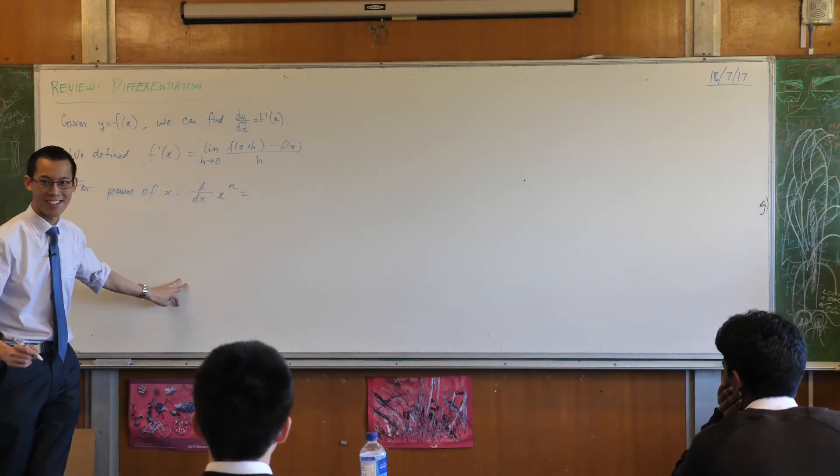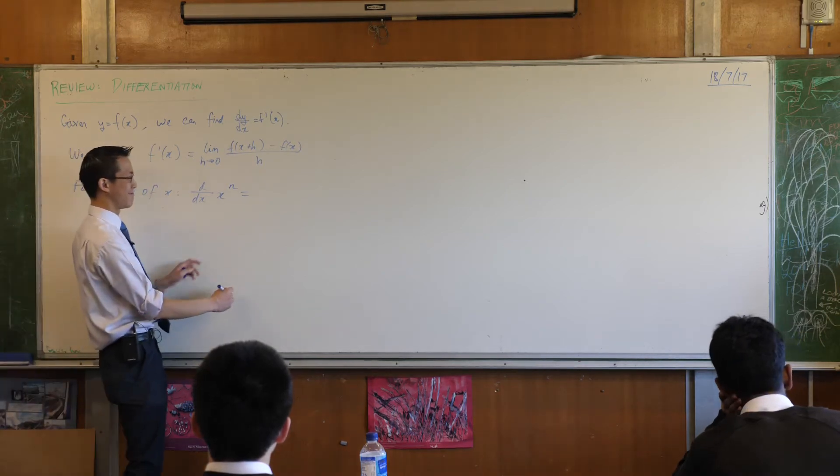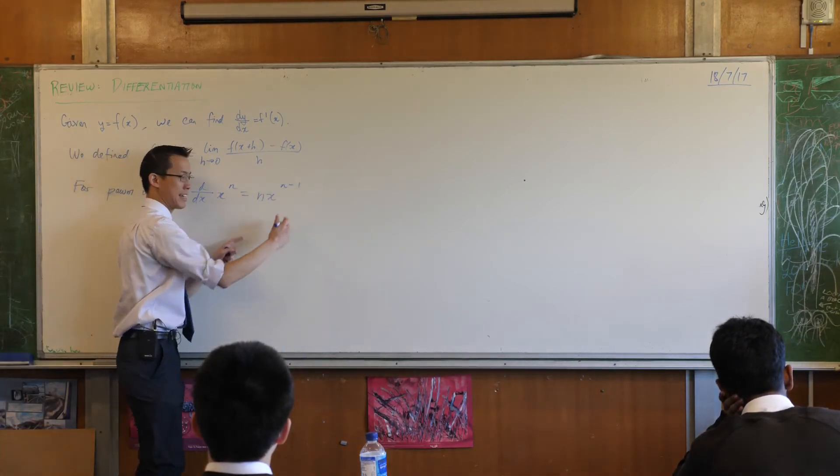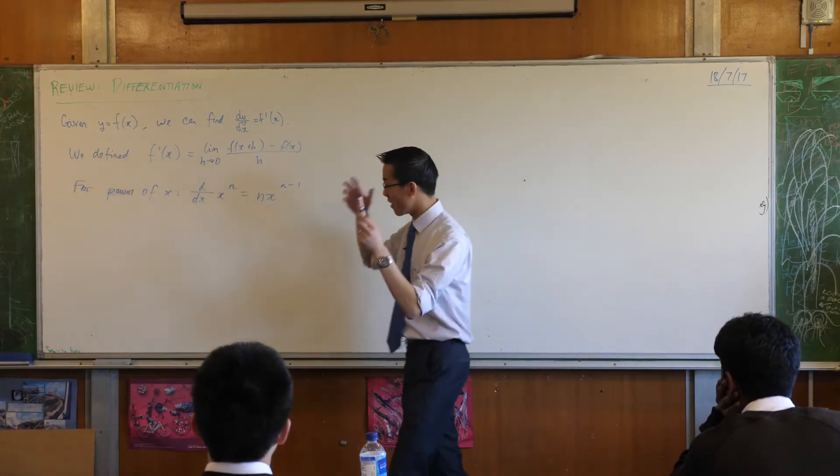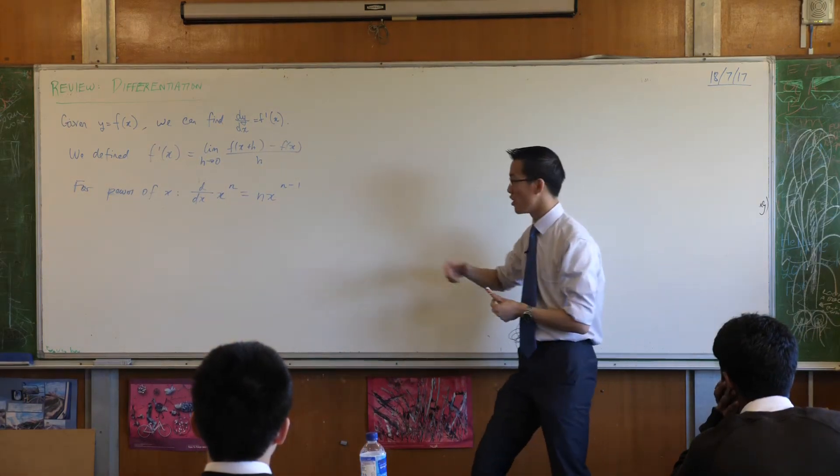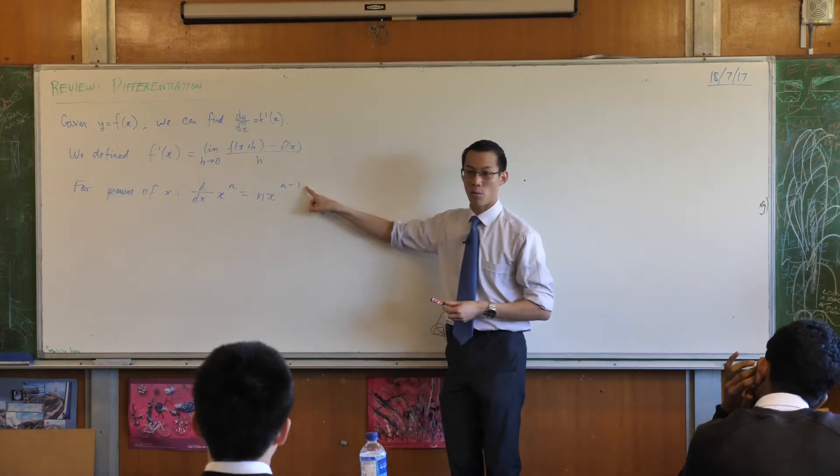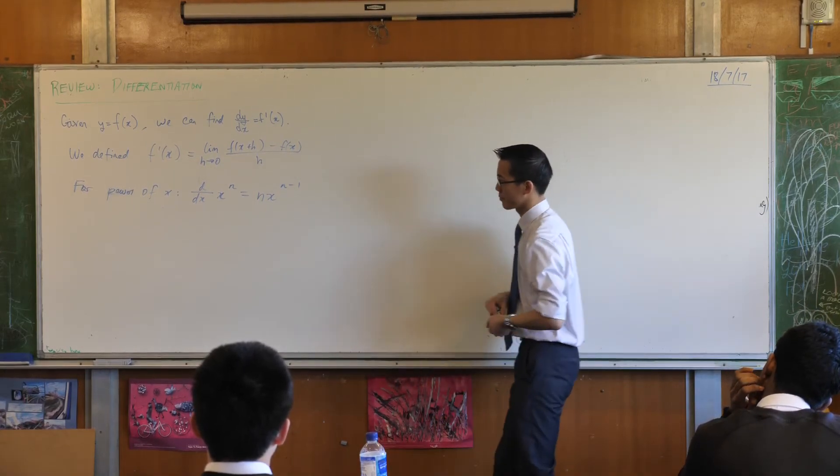To you, Baba? What do you reckon, Shad? n times x, and then the power of n minus 1. Fantastic. So our shorthand way of remembering that was, you bring the power out the front, there he is, and then you reduce the power by one. Hunky-dory, all good.